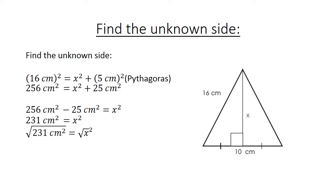The square root of 231 cm. X is now 15.198. And we round it to the 1 decimal. 15.2 cm.